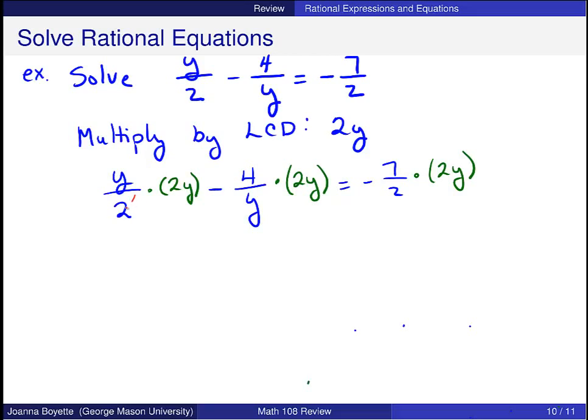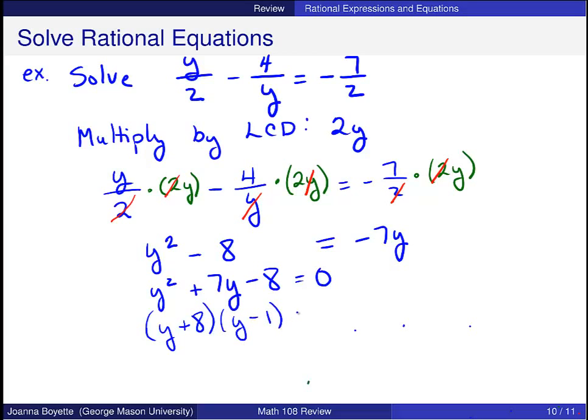When you do that, you should get a lot of cancellation. For example, here in this first term, the 2s cancel, and I get y times y, which should leave me with y squared. In the second term, the y's cancel, and I get negative 4 times 2, which is minus 8. In this last term, the 2s cancel, and I should be left with negative 7y. This is a quadratic equation, y squared, and I put the 7y on the left side, so I add 7y to both sides, then solve by factoring. I get y plus 8 equals 0 and y minus 1 equals 0. So y equals negative 8 and y equals positive 1.